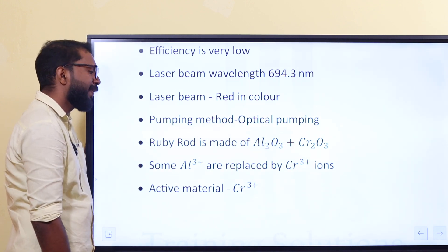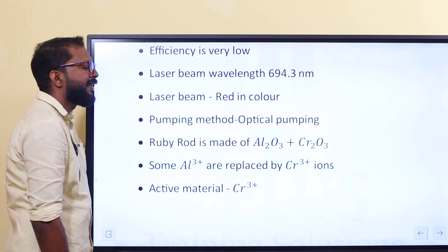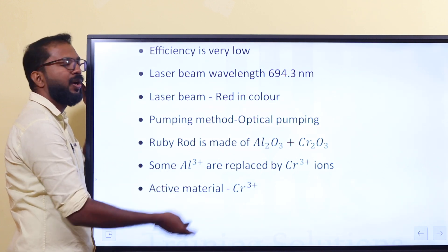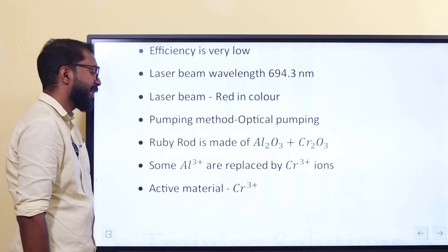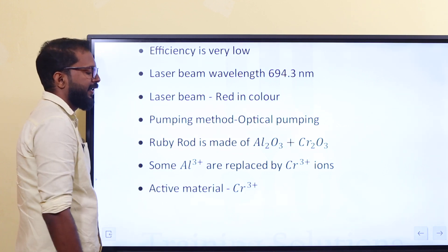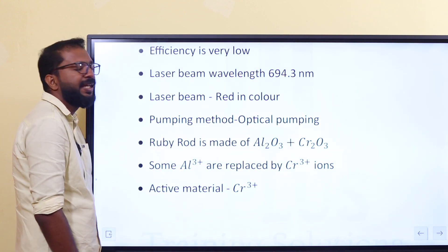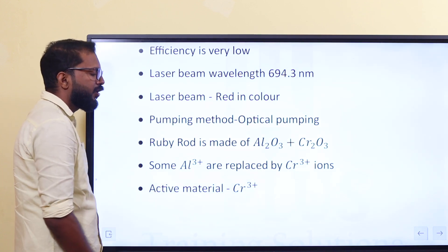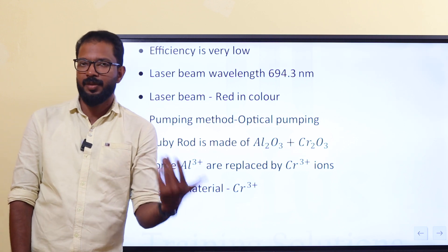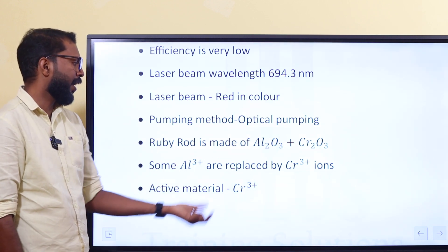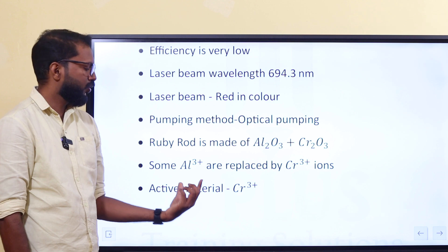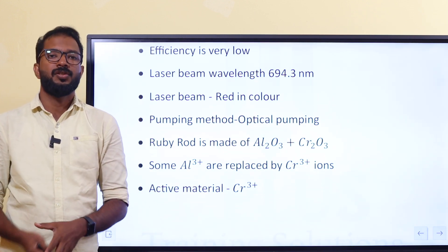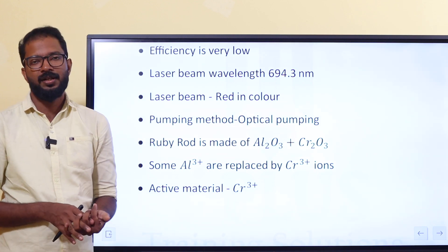Some Al3+ ions are replaced by Cr3+ (chromium) ions. The aluminium ions are replaced by chromium ions. The active material is the chromium ion, Cr3+.